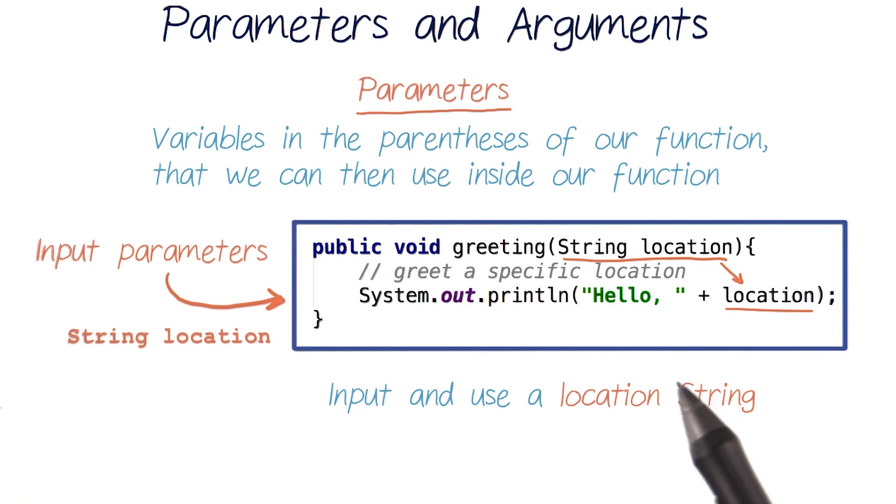The main difference is that any variables we've declared inside our functions can only be accessed and used inside that function and nowhere else. And this parameter location is referring to information that can exist outside the scope of our function. So now we can include this location string in our greeting message.